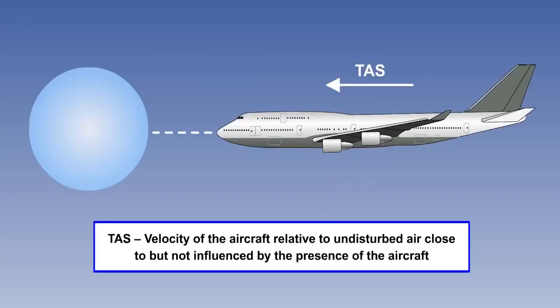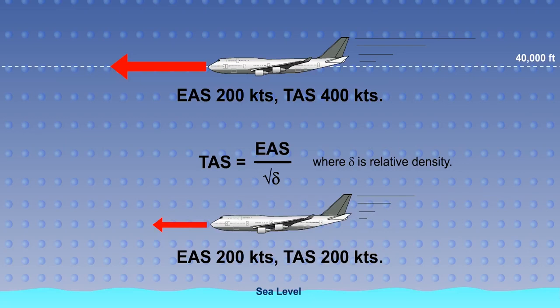True airspeed is the actual speed of the aircraft through the air, and is the only real speed of those considered so far, all the others being dynamic pressures. The ASI is merely a pressure gauge calibrated to read as speed. TAS is EAS divided by the square root of the relative density, that is the ambient density as a proportion of the ISA sea level density. The ASI is calibrated to ISA sea level, so it will only read TAS if the density is 1.225.